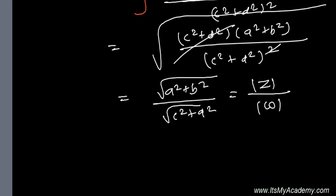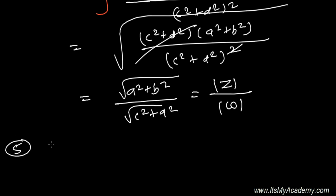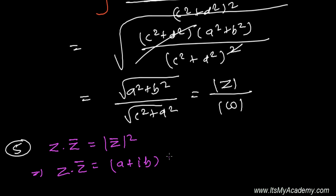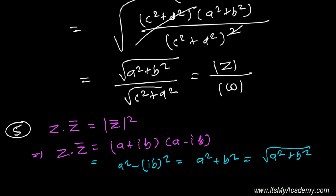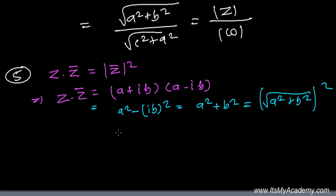The next property is that when you multiply a complex number by its conjugate, the result equals the square of the absolute value. Let Z equal A plus iB and Z-bar equal A minus iB. Using the formula (A plus B)(A minus B) equals A squared minus B squared, and noting that i squared equals minus one, we get A squared plus B squared, which is the square root of (A squared plus B squared) whole squared — that is, the absolute value of Z squared, so Z times Z-bar equals |Z| squared.